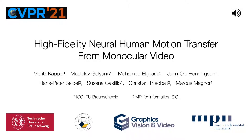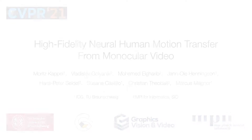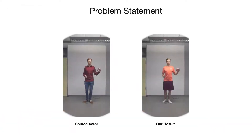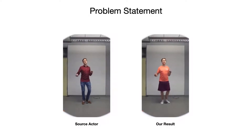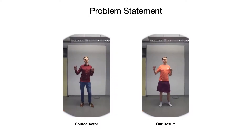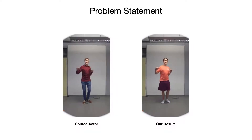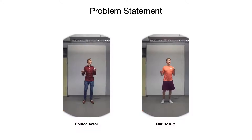We present a new framework for high fidelity neural human motion transfer for a monocular video that handles deformations of clothing in a temporally coherent way. Given a single monocular RGB video of a target person, our method is able to re-enact this person through the motion performed by another source video using an image-to-image translation approach.